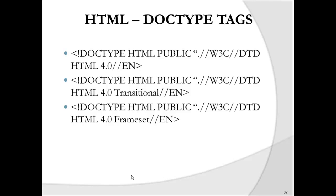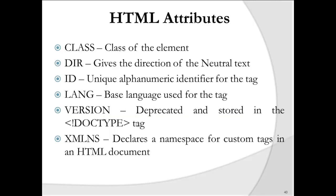DOCTYPE types can be standard, transitional, or frameset. HTML tag attributes include class (specifies the class of the element), dir (direction of neutral text), ID (unique alphanumeric identifier), LANG (base language), VERSION (deprecated, stored in DOCTYPE), and XMLNS (declares the namespace for custom tags in an HTML document).